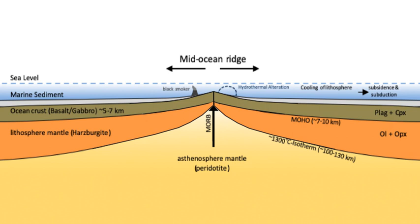The bathymetry, or profile, of a mid-ocean ridge is largely determined by the seafloor spreading rate at the ridge. Slow spreading ridges such as the Mid-Atlantic Ridge generally have large, wide rift valleys, sometimes as wide as 10–20 km (6.2–12.4 miles), and very rugged terrain at the ridge crest that can have relief of up to 1,000 m (3,300 ft).